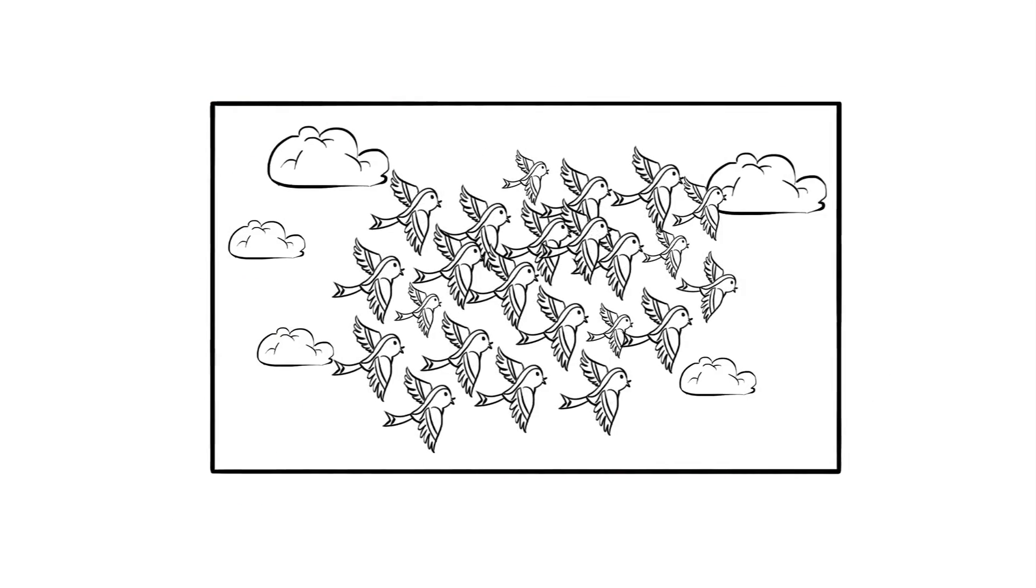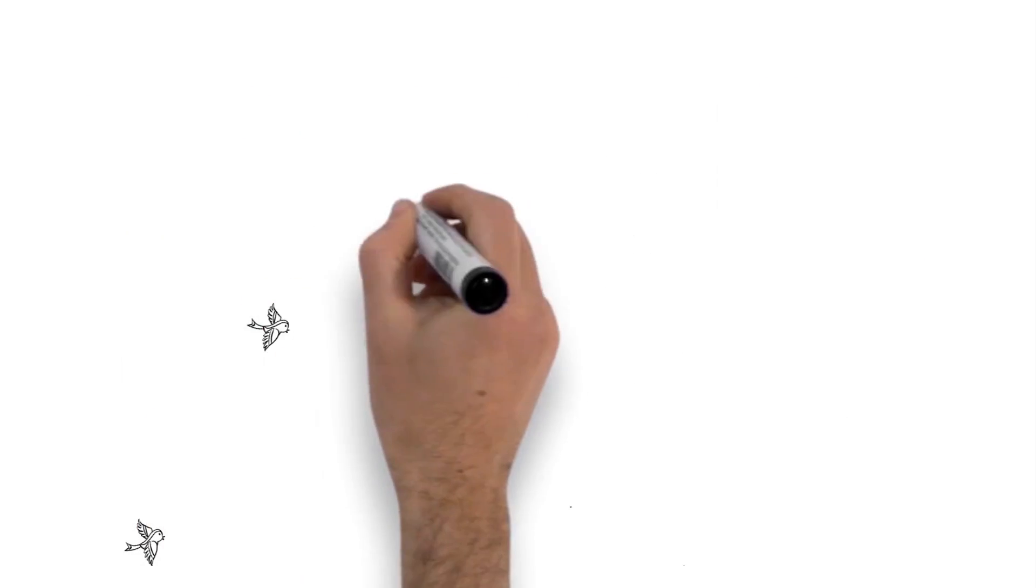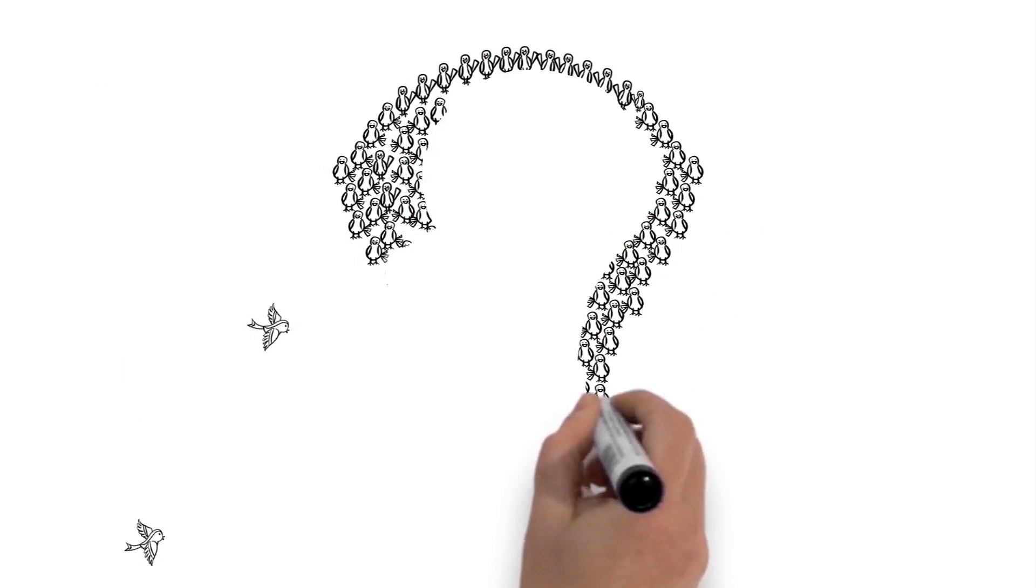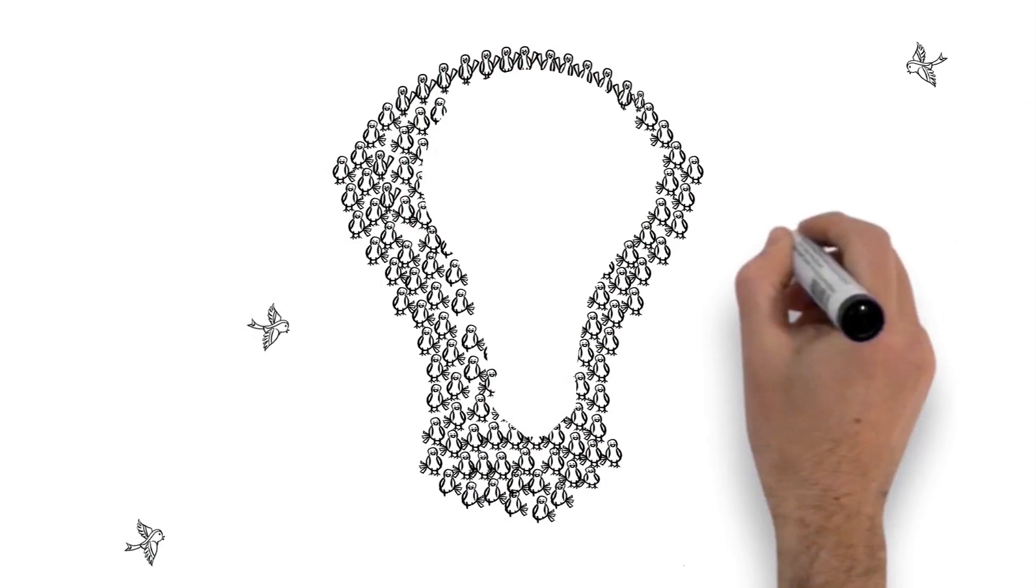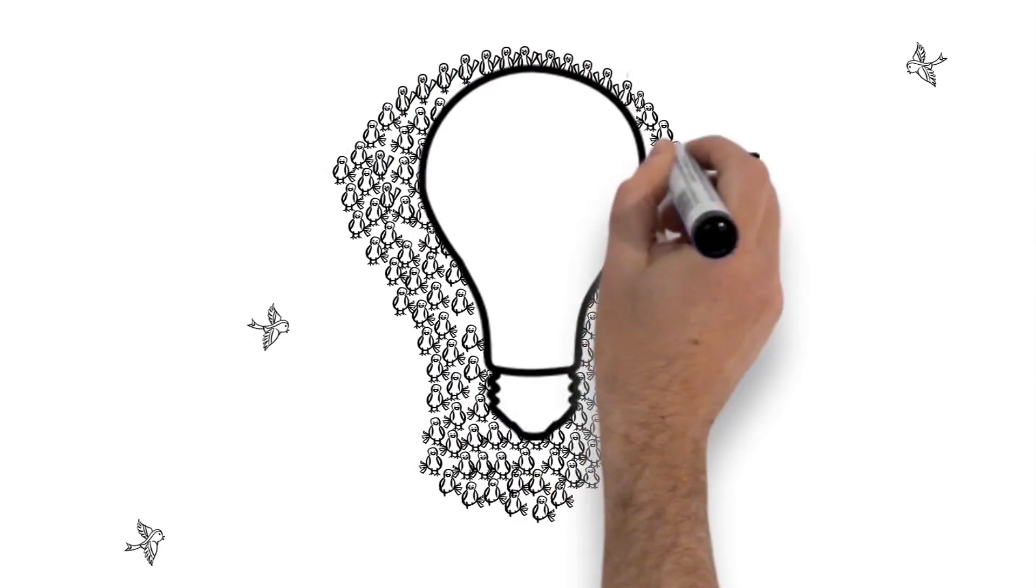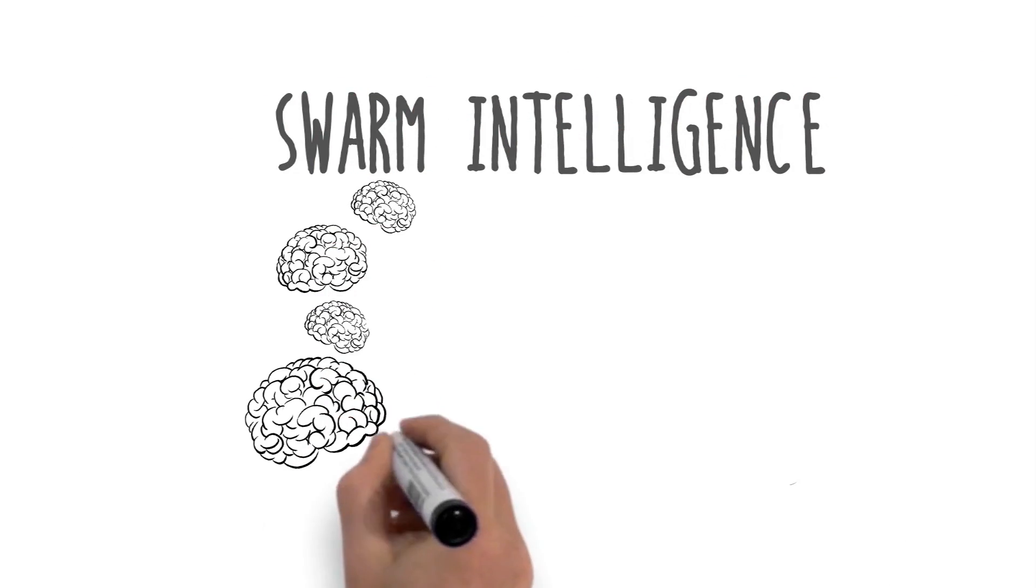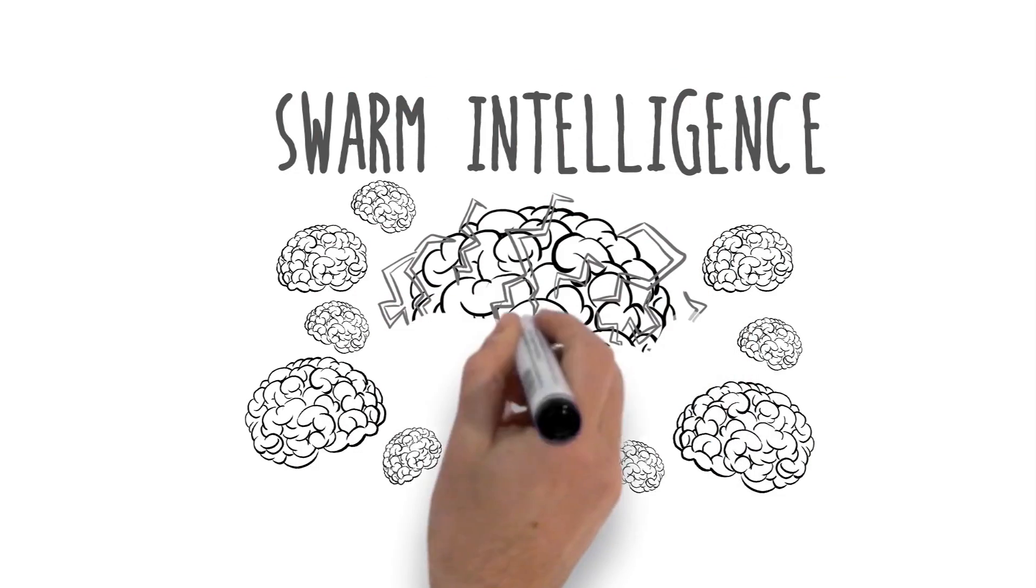Why do birds flock, bees swarm, and fish school? They do this because the groups are smarter when thinking together than the individuals would be on their own. Scientists call this swarm intelligence, and it combines the power of many minds into one.